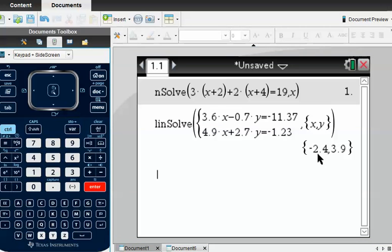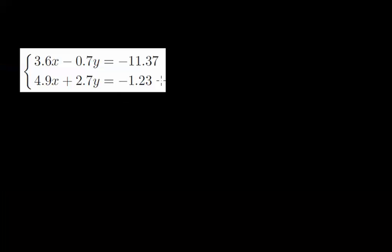So what's it telling us? Minus 2.4, 3.9. And there your answers for x and y. So to satisfy this simultaneous equation, x has got to be minus 2.4, and y has to be 3.9.